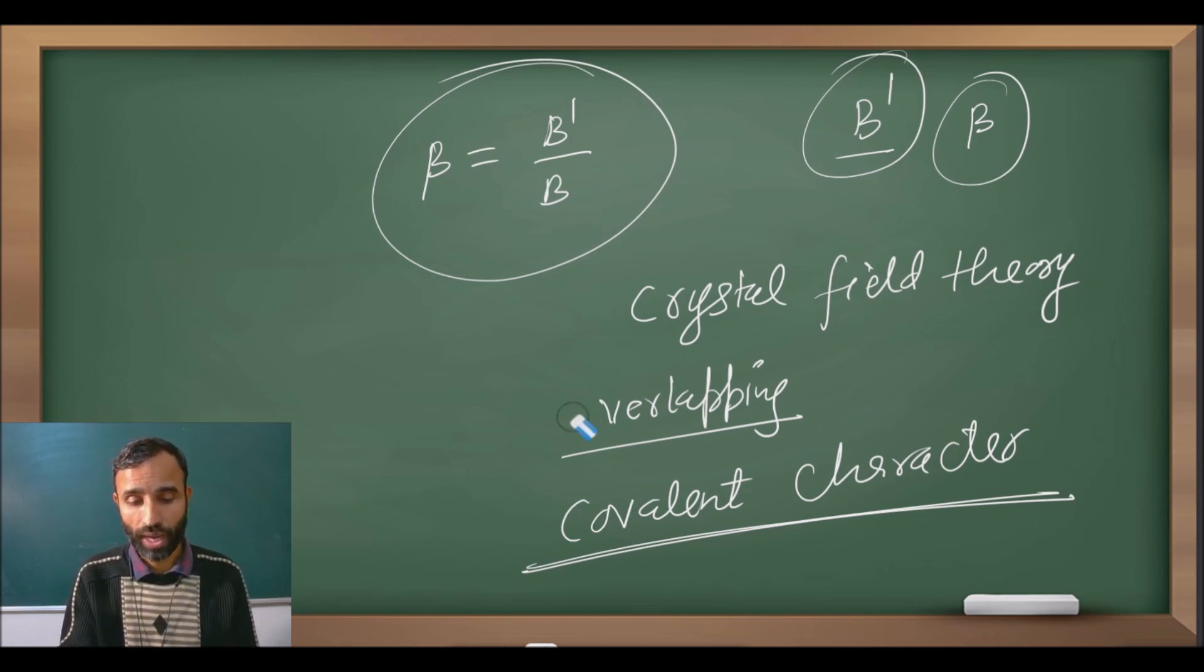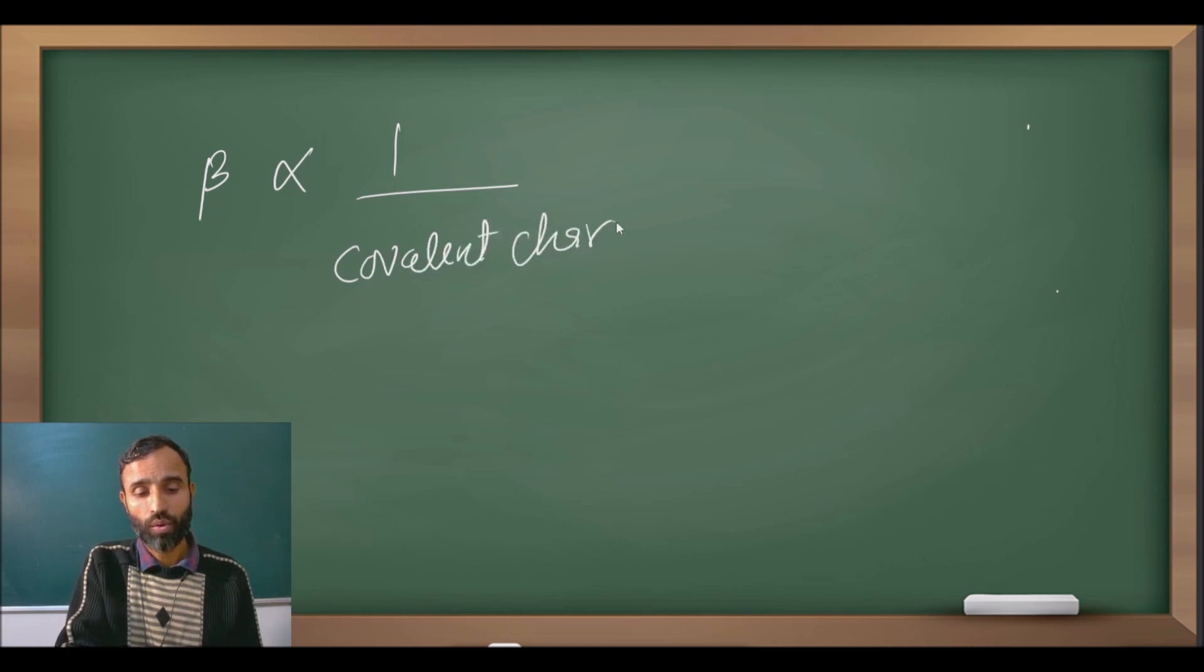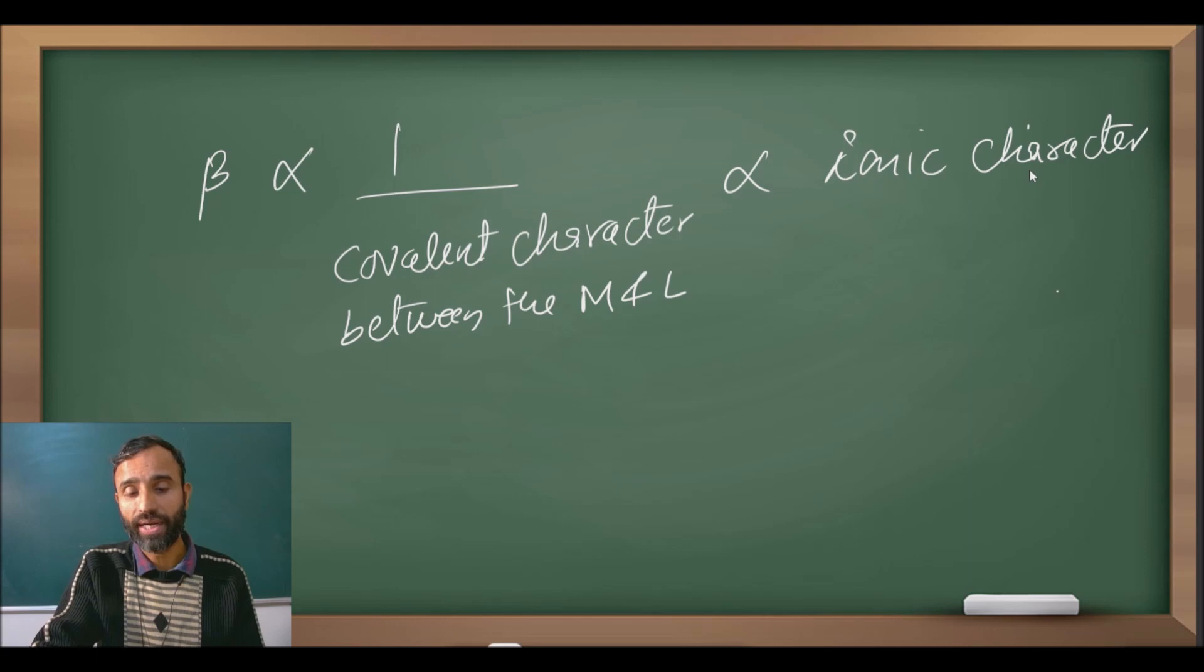We can say that nepheloxetic effect is nothing but it measures the covalent character between the metal and the ligand. More is the overlapping, more is the covalent character between metal and ligand, lesser is the value of B dash and therefore lesser is the value of beta. So as B dash decreases, covalent character increases. You can write beta is inversely proportional to covalent character between the metal and the ligand, and more is the covalent character, lesser is the value of beta, and directly proportional to ionic character between the metal and the ligand.